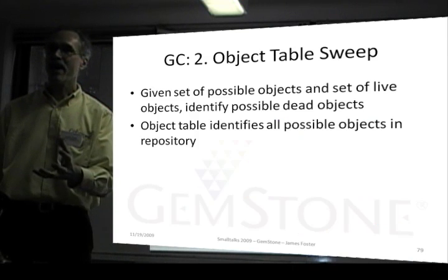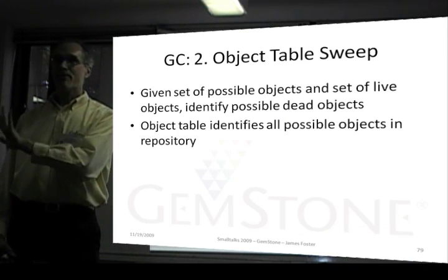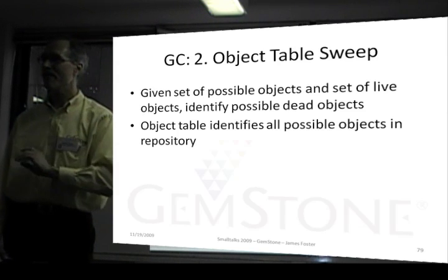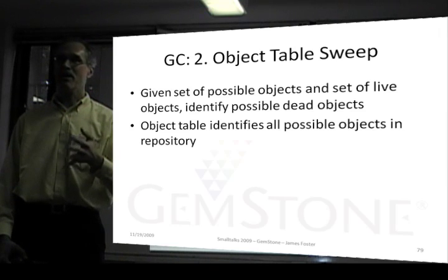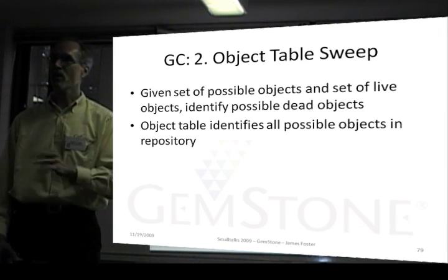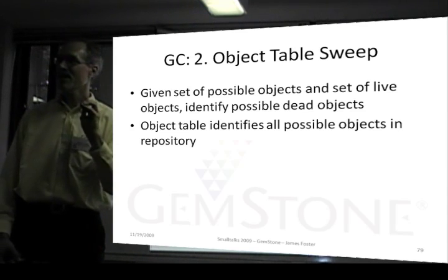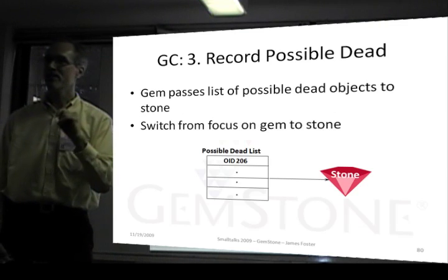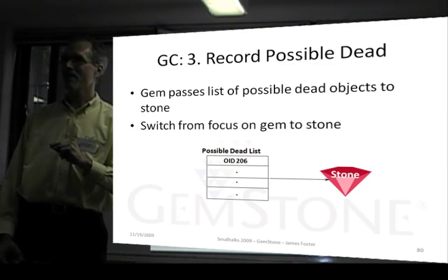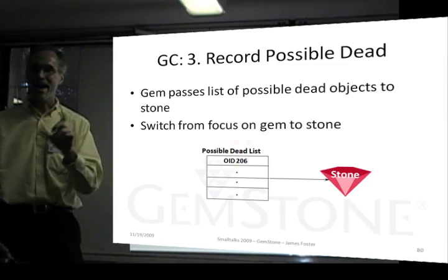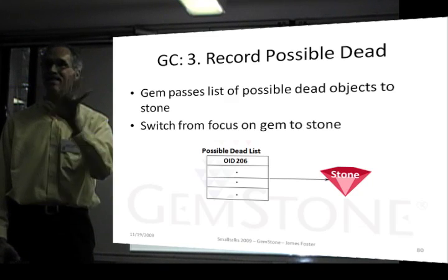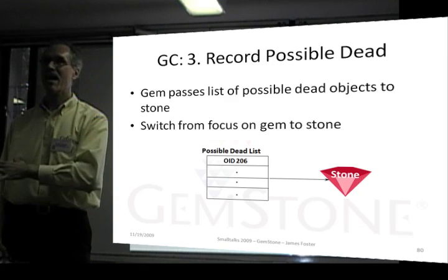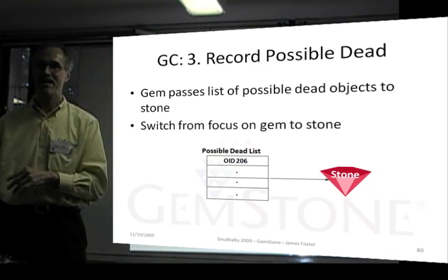Step two: once we've gotten a list of referenced — that's live — objects, what we do is subtract the set of total objects from the live objects. The object table has a list of all possible objects, all objects that exist whether they're referenced or not. Once we have a list of live objects, we subtract that from the object table, giving us possible dead. Possible dead only means it wasn't referenced when we scanned the database — it might be referenced now. We pass that list to the stone. That separate gem is by itself building this list of live objects, and subtracting live from all objects gives us possible dead.